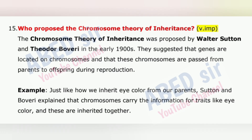Next important question is 15: The chromosome theory of inheritance was proposed by Walter Sutton and Theodore Boveri in the early 1900s. They suggested that genes are located on chromosomes and that these chromosomes are passed from parents to offspring during reproduction. Just like how we inherit eye color from our parents, Sutton and Boveri explained that chromosomes carry the information for traits like eye color, and these are inherited together.